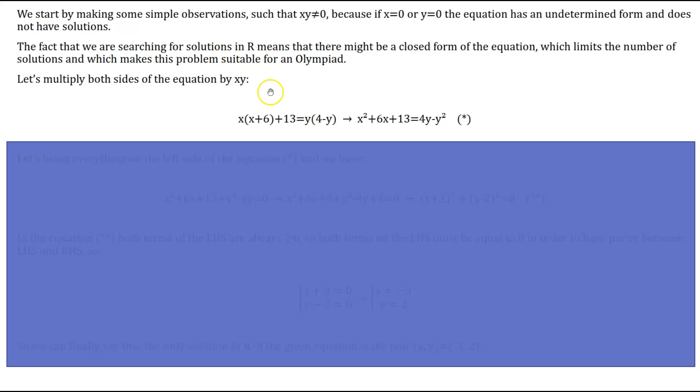By expanding the factors on both sides of the equation, we have x² + 6x + 13 = 4y - y². Let's call this equation number one.